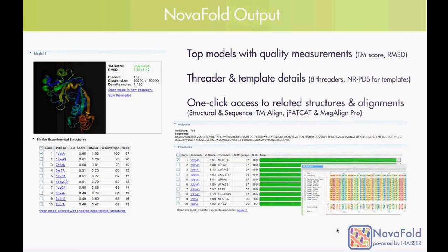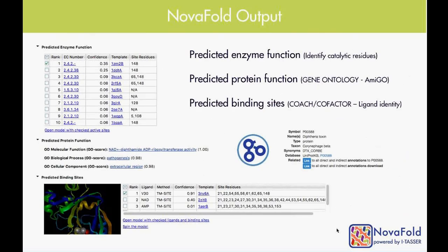An extension of the NOVAFOLD output: throughout the automated process, based on fold recognition, there are predictions made about the potential function of the protein. That information is delivered into the report along with easy link access to the Amigo website based on gene ontology. Also, if there are predicted ligand binding sites or enzymatic activity, we identify and even model in potential ligands as well as identify residues that are thought to be part of the active site.